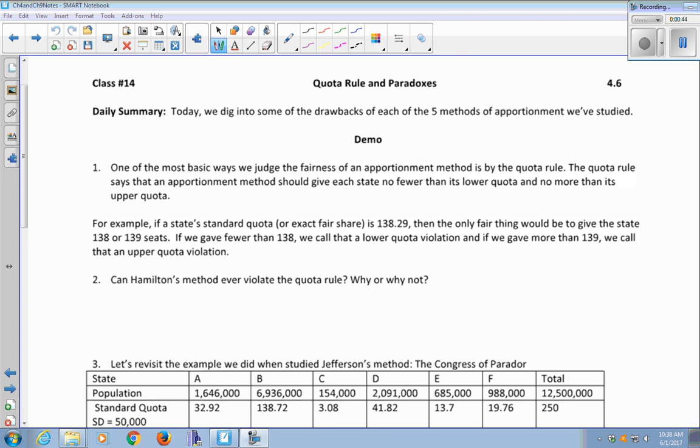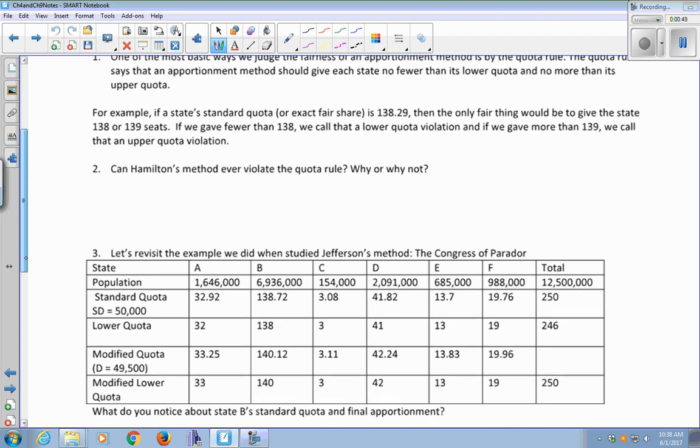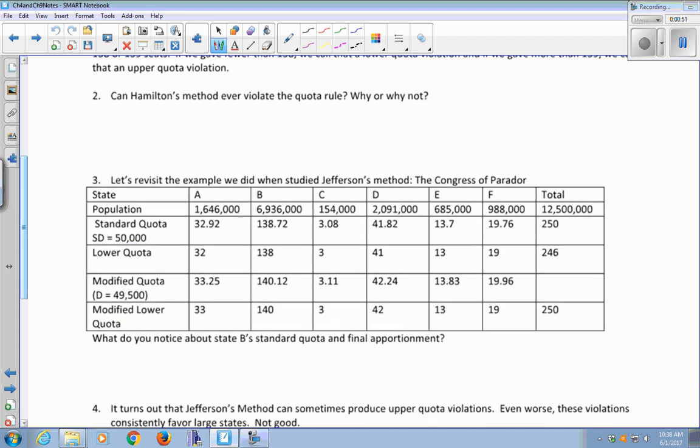Can Hamilton's method ever violate the quota rule? No, because think about the way Hamilton's method works. Every state, we calculate their exact fair shares and then round them down. So every state gets at least its lower quota. And then some states get one of the surplus seats, giving them their upper quota. So every state gets at least the lower quota.